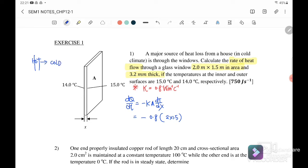So the initial temperature is 15°C and final temperature is 14°C. We will take T final minus T initial over the thickness 3.2 times 10 to the power of negative 3. If we calculate, we will get 750 joule per second or you can write it as 750 watt.